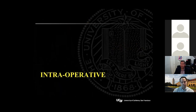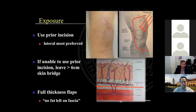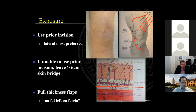Moving on to some intraoperative pearls. As mentioned earlier, you want to use the most lateral prior vertical incision because of the medial-based blood supply to the anterior skin. While the textbooks often suggest a five to six centimeter skin bridge, this may not always be possible. Attempts should be made to avoid acute angles between incisions. After the skin incision, full-thickness flaps should be elevated. My residents all know one of my mantras is 'no fat left behind,' and this is to avoid disrupting the rich network of anastomoses in the subcutaneous fat.